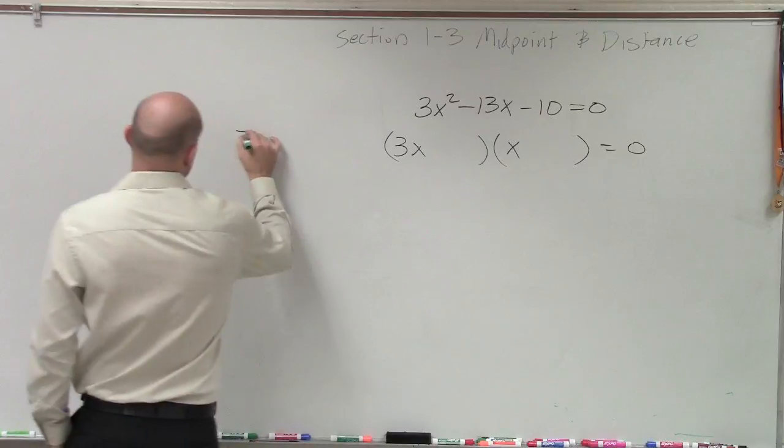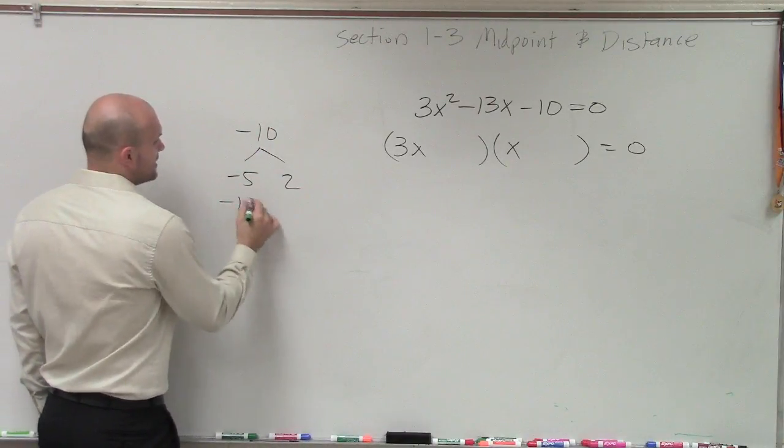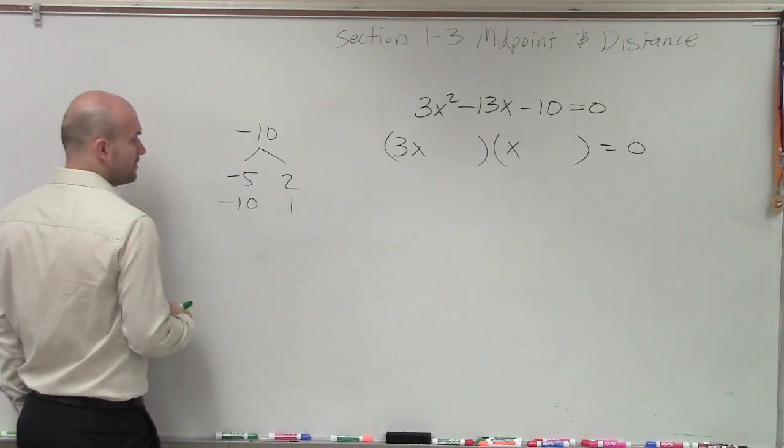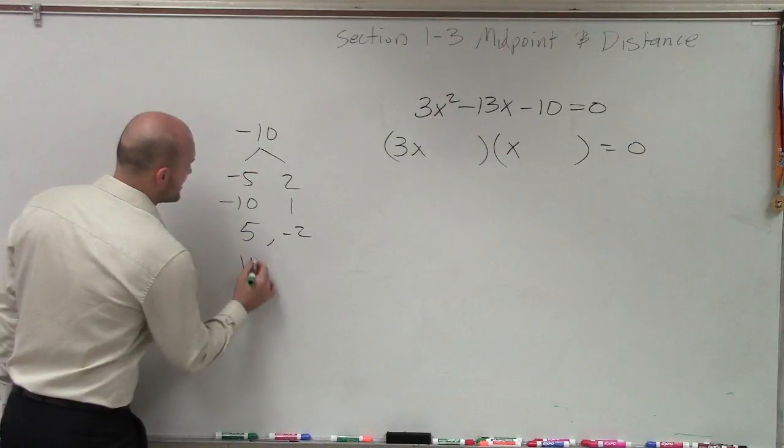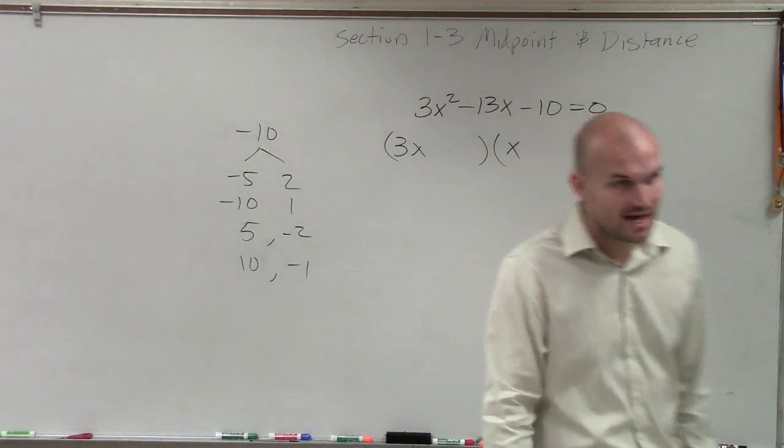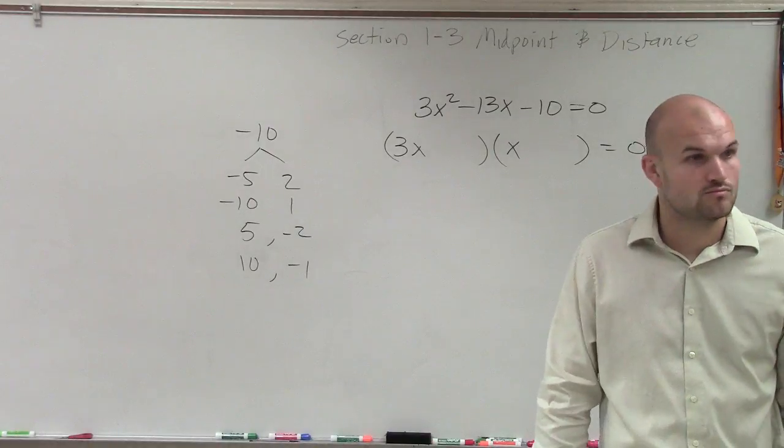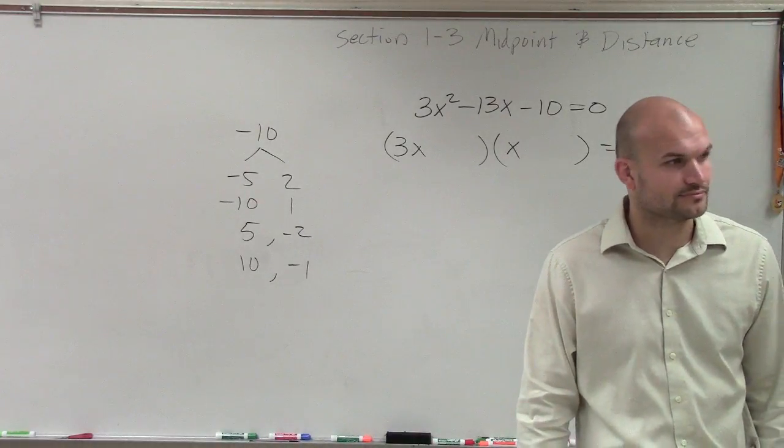Then I need to determine what two numbers can multiply to give me negative 10. So I will break that down because it can be negative 5, positive 2, negative 10, positive 1. It can be 5 and negative 2, and it can be positive 10 and negative 1. Is there any other numbers that multiply to give me negative 10? Integers that I can factor it out, right?